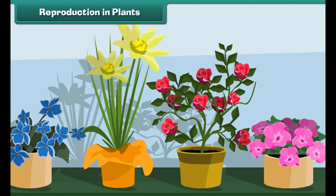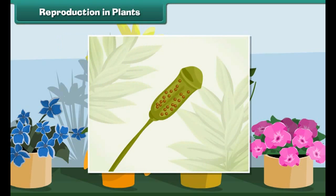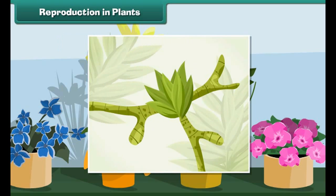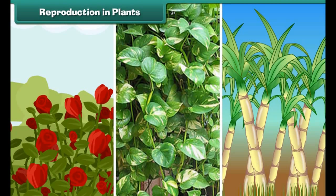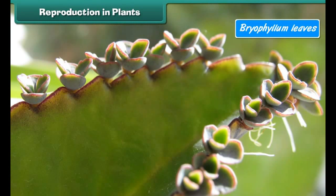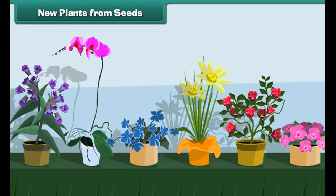Reproduction in plants: Plants reproduce in different ways. Most of the flowering plants produce seeds. Some plants do not produce seeds — they produce spores which can grow into a new plant. Some plants can reproduce from their body parts. For example, potato can be developed from an underground stem having buds on it. Rose, money plant, and sugarcane can be developed from stem cuttings. Bryophyllum can be developed from its leaves. Sweet potato grows from its roots.